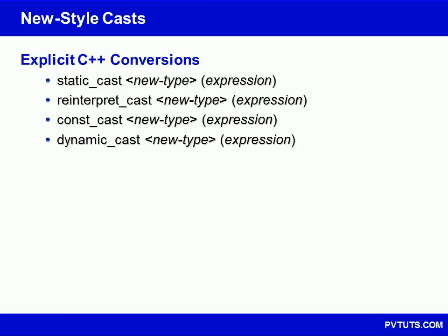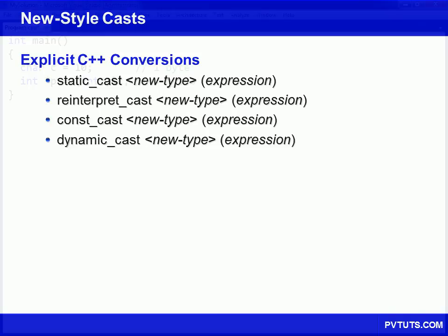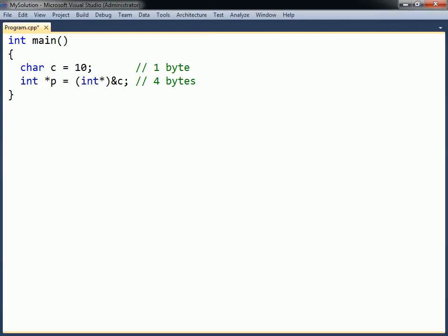The static cast performs conversions between compatible types. It is similar to the C-style cast but is more restrictive. For example, the C-style cast would allow an integer pointer to point to a char. Since this results in a 4-byte pointer pointing to one byte of allocated memory, writing to this pointer will either cause a runtime error or will overwrite some adjacent memory.